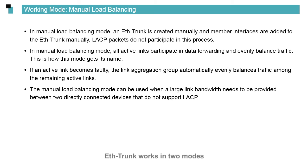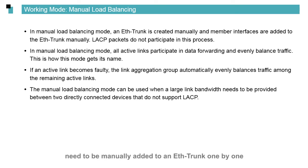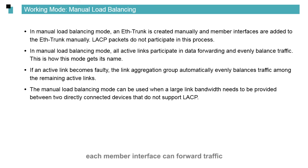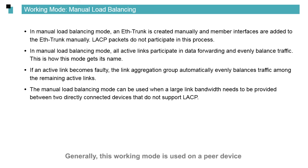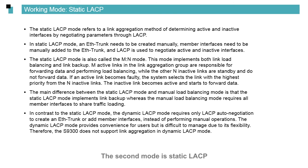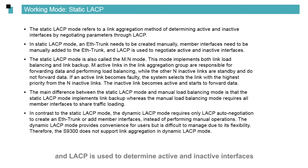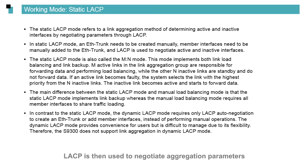ETH trunk works in two modes. The first mode is manual load balancing, where member interfaces in an aggregation group need to be manually added to the ETH trunk one by one. Each member interface can forward traffic and this working mode does not require a protocol. Generally this mode is used on a peer device that does not support LACP and both parties do not negotiate. The second mode is static LACP, where all member interfaces need to be manually added to an ETH trunk and LACP is used to determine active and inactive interfaces. After an ETH trunk is manually created, LACP is then used to negotiate aggregation parameters.